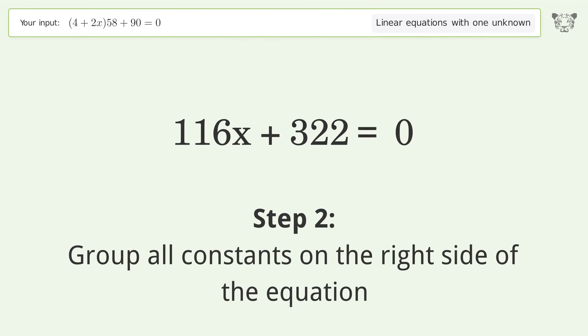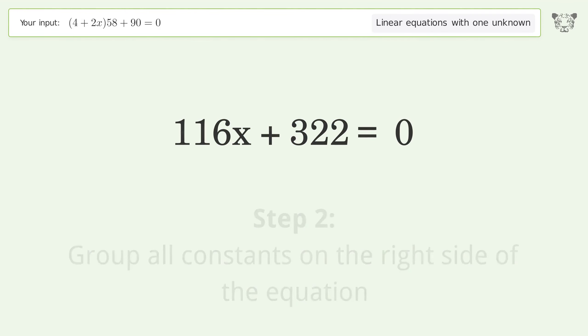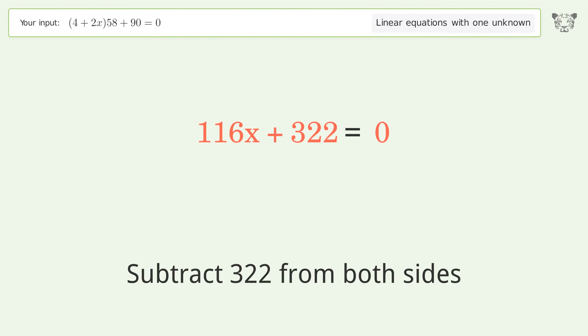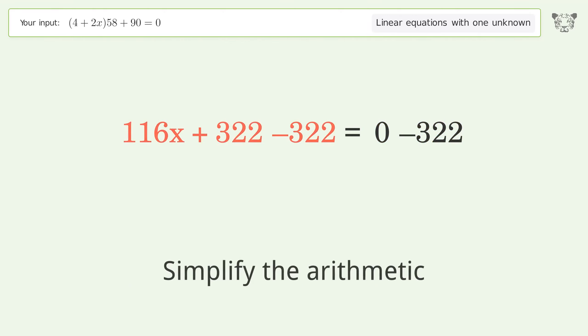Group all constants on the right side of the equation. Subtract 322 from both sides, then simplify the arithmetic.